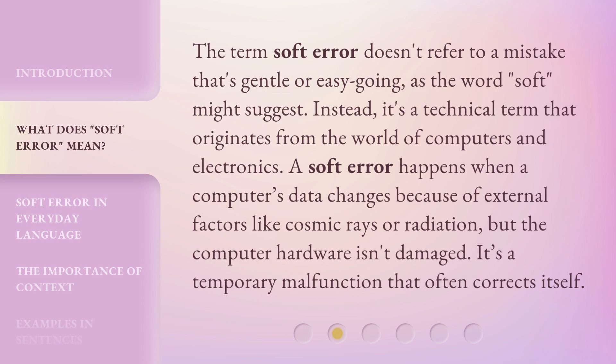The term soft error doesn't refer to a mistake that's gentle or easygoing, as the word soft might suggest. Instead, it's a technical term that originates from the world of computers and electronics. A soft error happens when a computer's data changes because of external factors like cosmic rays or radiation, but the computer hardware isn't damaged. It's a temporary malfunction that often corrects itself.